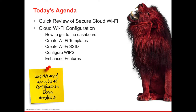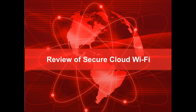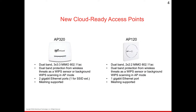If we have time, we'll also look at some advanced features. Those of you who are partners know we just launched our cloud Wi-Fi certification exam, available through Criterion just like your other certifications. Looking at the secure cloud Wi-Fi offerings, we have two models: the AP 320, which is a 3x3, and the AP 120, which is a 2x2.